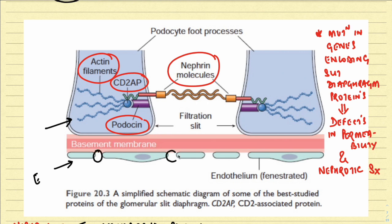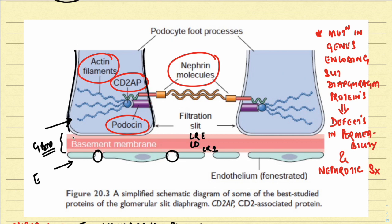The glomerular basement membrane has three layers: lamina densa, lamina rara externa, and lamina rara interna. The podocyte — that is the visceral epithelium — sits outside the GBM, and the foot process of the podocyte is visible. In between two podocyte foot processes there is a space called the filtration slit or slit diaphragm.